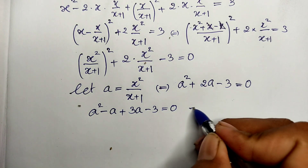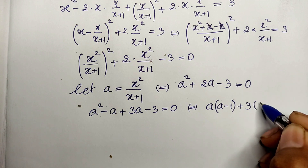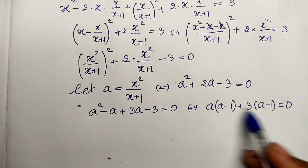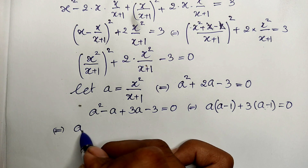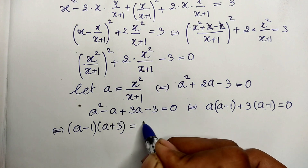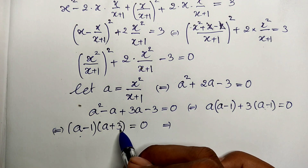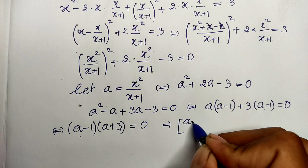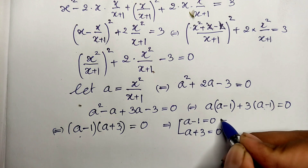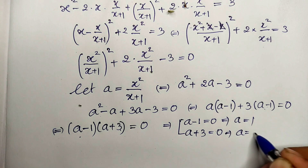Factoring, we get a times (a minus 1) plus 3 times (a minus 1) equals 0. Taking (a minus 1) as a common factor, we get (a minus 1) times (a plus 3) equals 0. So either a minus 1 equals 0 giving a equals 1, or a plus 3 equals 0 giving a equals minus 3.